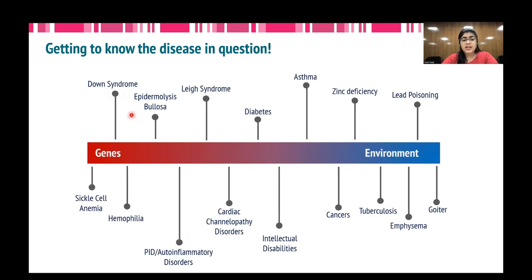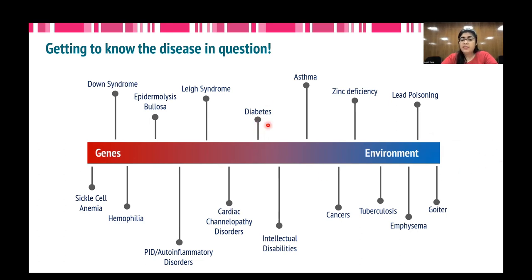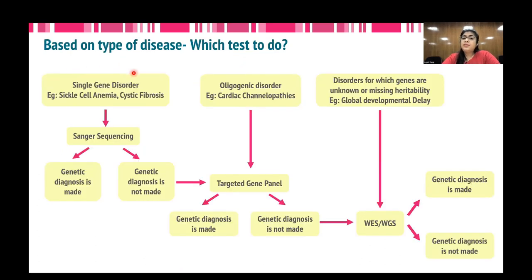In the extreme ends of the spectrum, classical examples include sickle cell anemia, Down syndrome, and hemophilia on the genetic side, and goiter, lead poisoning, and emphysema on the environmental side. Diabetes has both components and is placed in the middle. Similarly, cardiac channelopathies and intellectual disability conditions can be caused by both genetic defects and environmental effects and are placed near the middle. Getting to know the disease in question is very important in order to decide which test to order, and once you understand the type of disease, you can use this approach for choosing the appropriate genetic test.